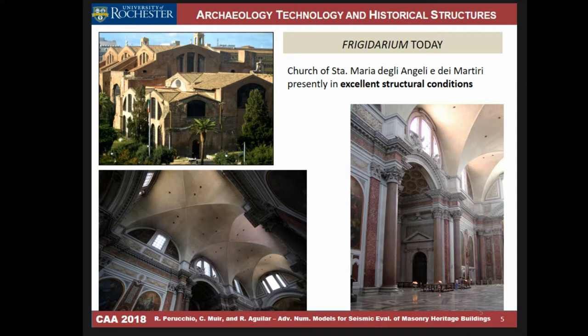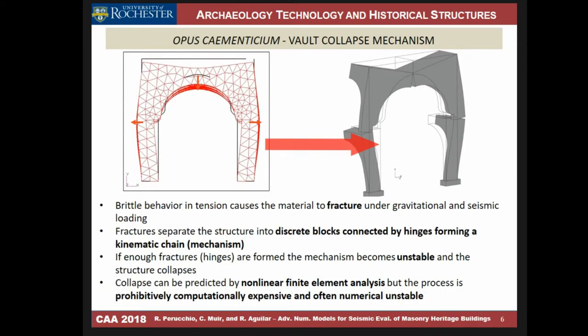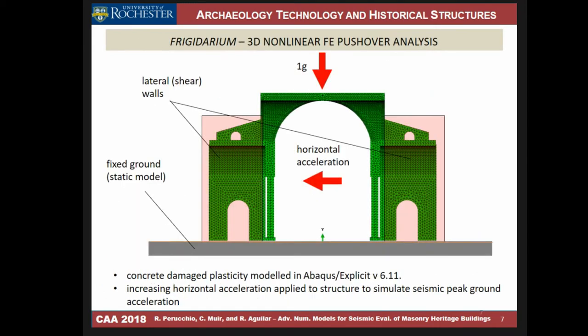If you compare that with the Baths of Caracalla, the major vault has collapsed. The interest here is to understand what specifically was done in the architecture of this structure to ensure this resistance. The mechanics of collapse for this type of structure depends very much on the nature of the material: the material is brittle, so with relatively small stresses in tension the material will fracture, which means you go from a continuum to a series of blocks. You can see the development of deformation under simple gravitational loads, the formation of fractures and hinges, and then collapse when a lateral acceleration due to an earthquake is applied.